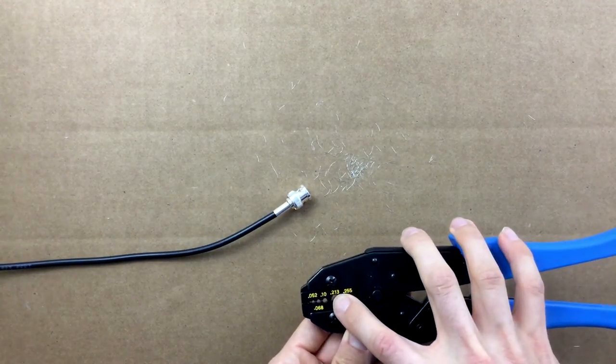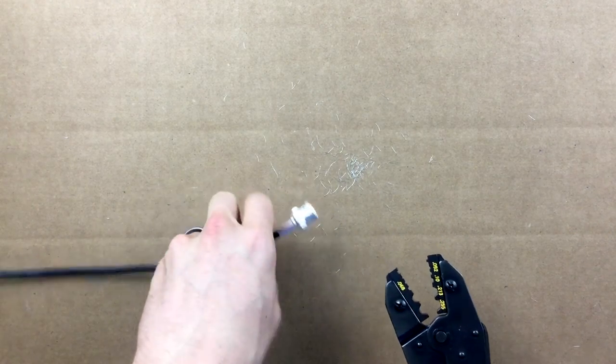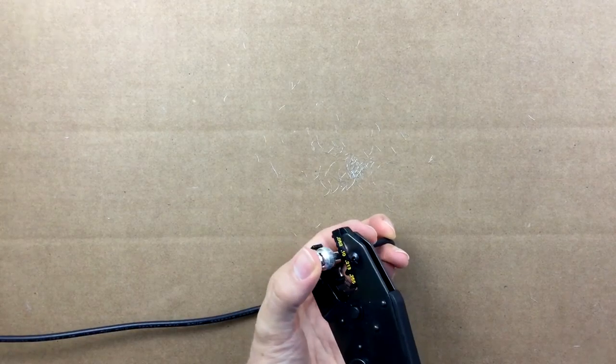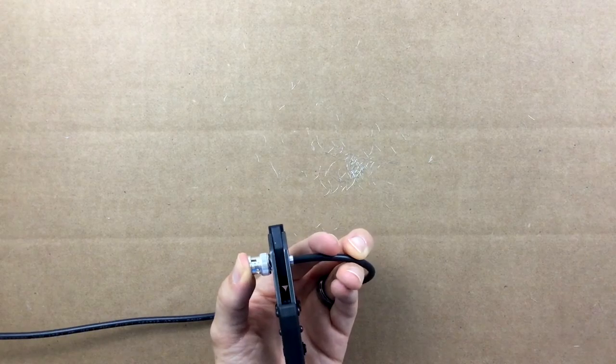Grab your ratcheting crimp tool with the appropriately sized .213 hex die. Open the ratchet and place it on the ferrule as close to the connector body as possible. Squeeze the crimper through its entire range of motion, successfully crimping the ferrule.